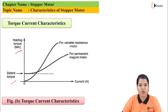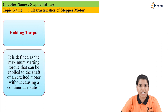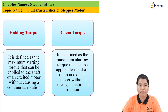Now let us see what is holding torque and detent torque. Holding torque is defined as the maximum value of starting torque which can be applied to the shaft of an excited motor without causing its continuous rotation. Detent torque is defined as the maximum value of starting torque which can be applied to the shaft of an unexcited motor without causing continuous rotation.